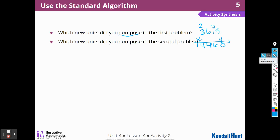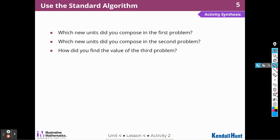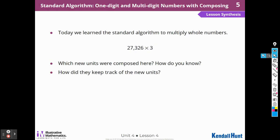Which new units did you do in the second problem? In the second problem, I need to do new 10,000s, because 3 times 6,000 was 18,000. And so you can share those problems with your classmates in class and your teacher. How did you find the value of the third problem? Well, I just continued in that same thing, right? It was a bigger number, but we got it. Today we learned the standard algorithm to multiply whole numbers, 27,326 times 3. Which new units were composed there, and how do you know? How did you keep track of the new units?